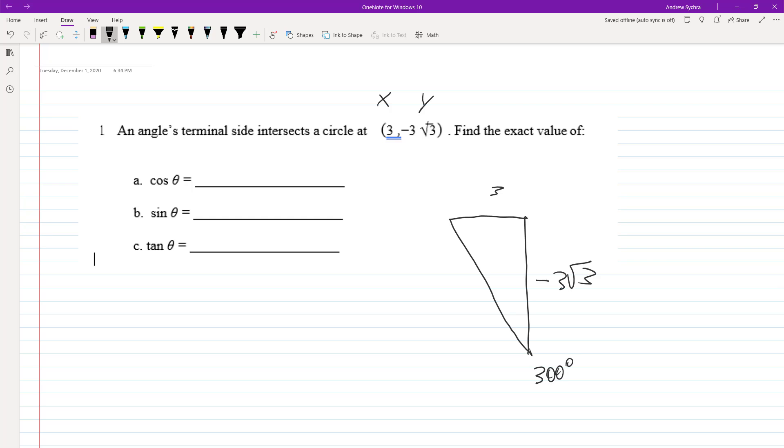So cosine is x over r and r in this case is going to be 2. So it's going to be equal to 3 over 2. And then for sine of theta, it's going to be y over r. Actually this shouldn't be 2, I'm sorry. It should be 6 because 9 plus 9 times 3, which is 27. It's equal to 6.